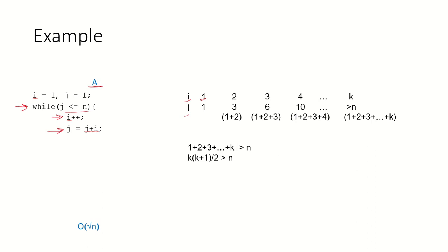Initially i and j both were 1 and it went inside the loop, so i was incremented to 2 and j was modified to be j plus i. So 2 plus 1 it became 3.